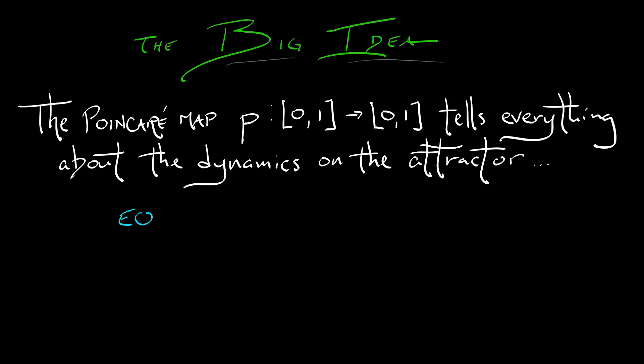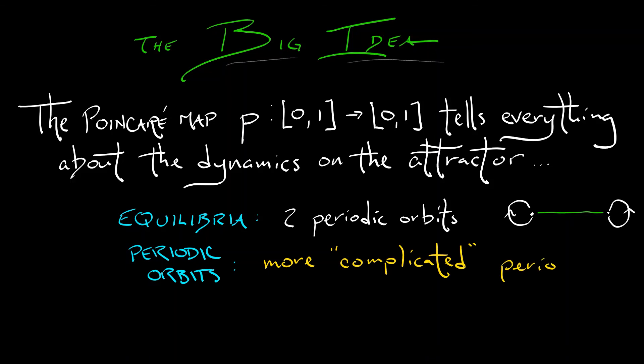If we examine the equilibria, we have two of them, and that corresponds to those two obvious periodic orbits, the boundary at zero and the other boundary at one. But what about other orbits of this Poincaré map? What about periodic orbits? Those, if they exist, are going to correspond to more complex periodic orbits on the geometric Lorenz system. That's a thing that we're going to want to focus on.